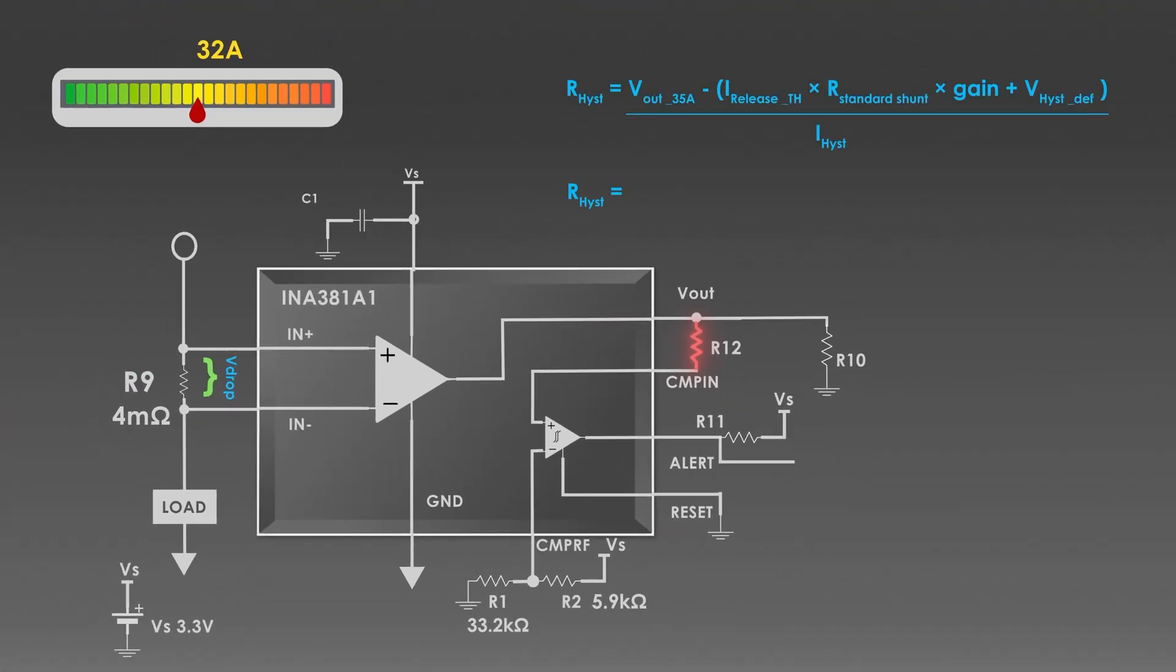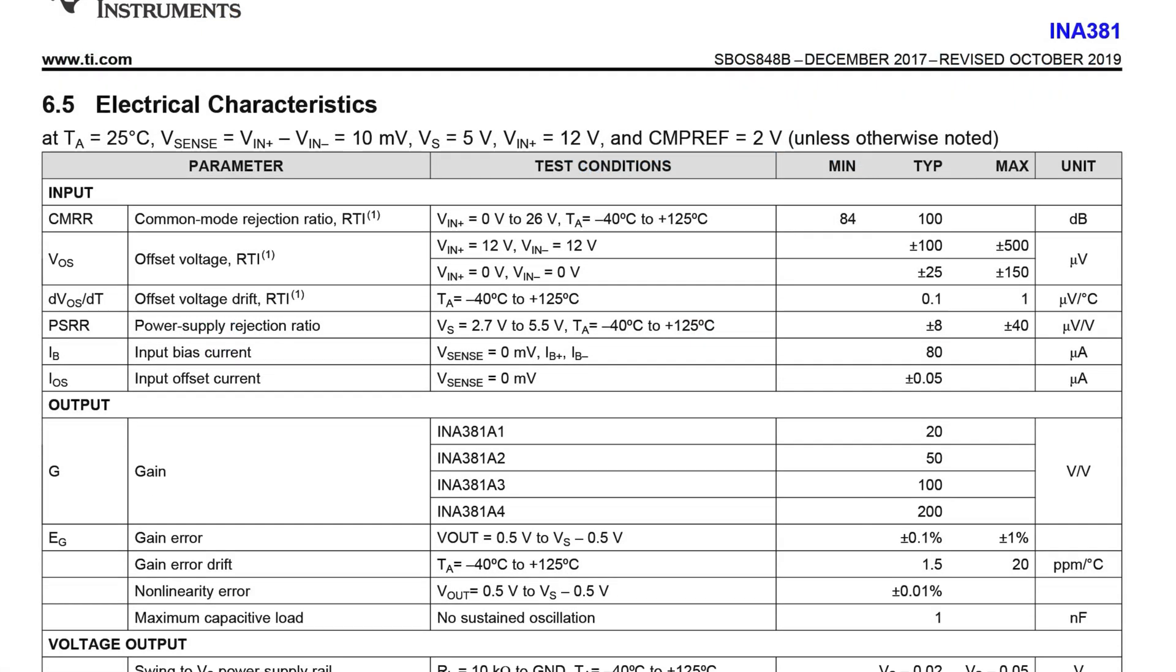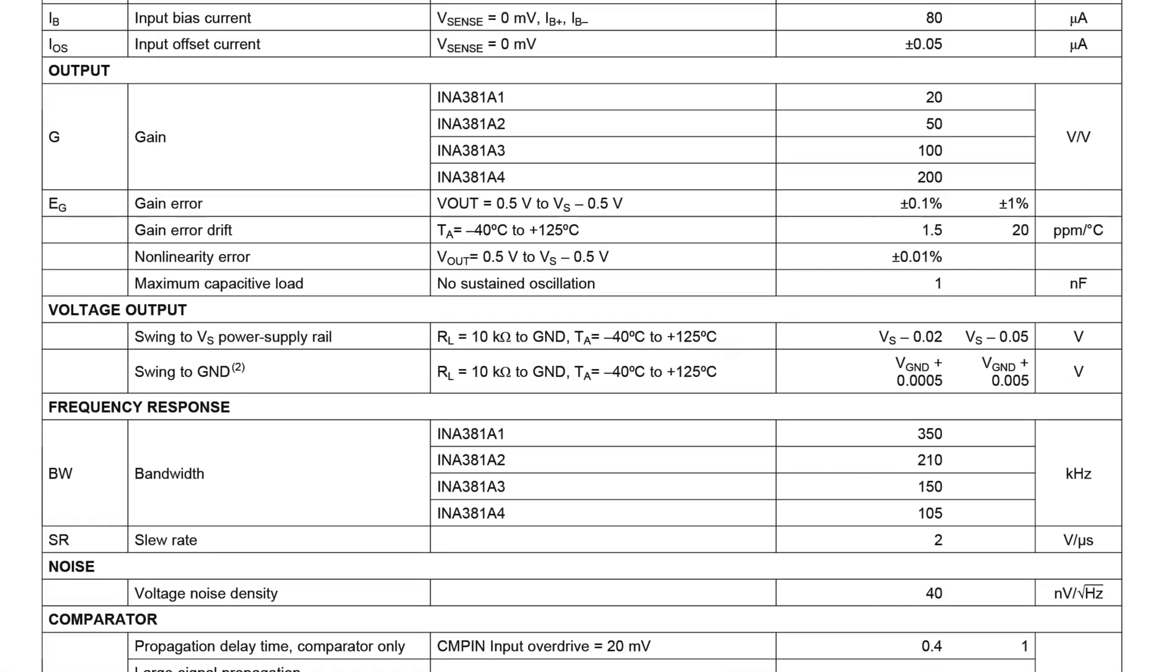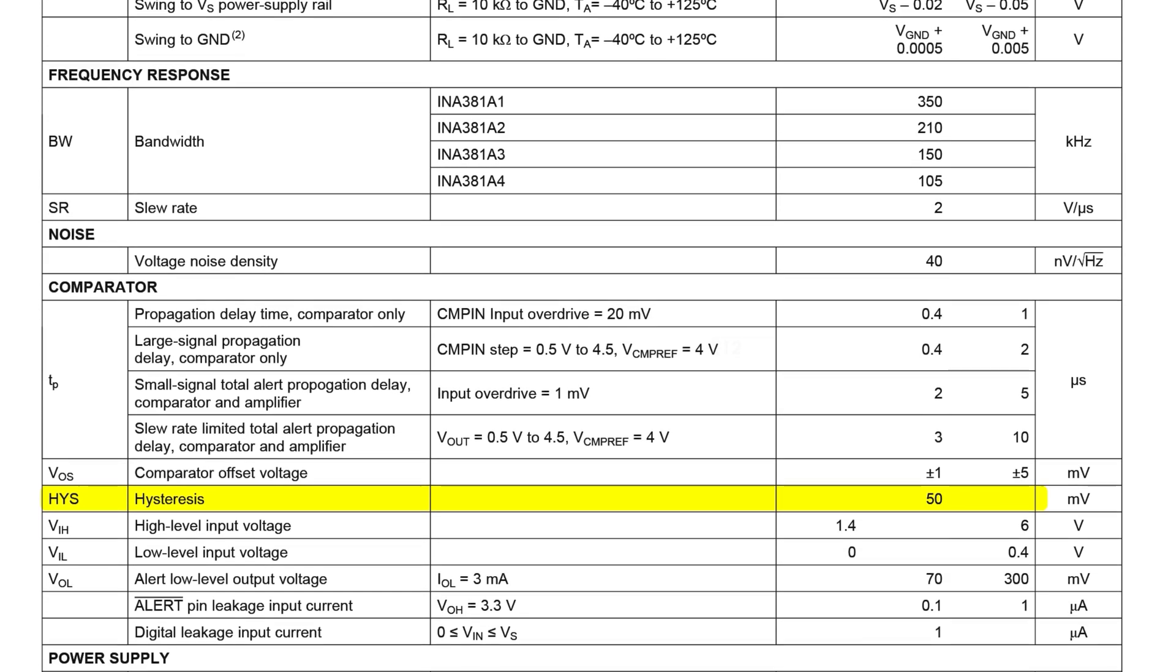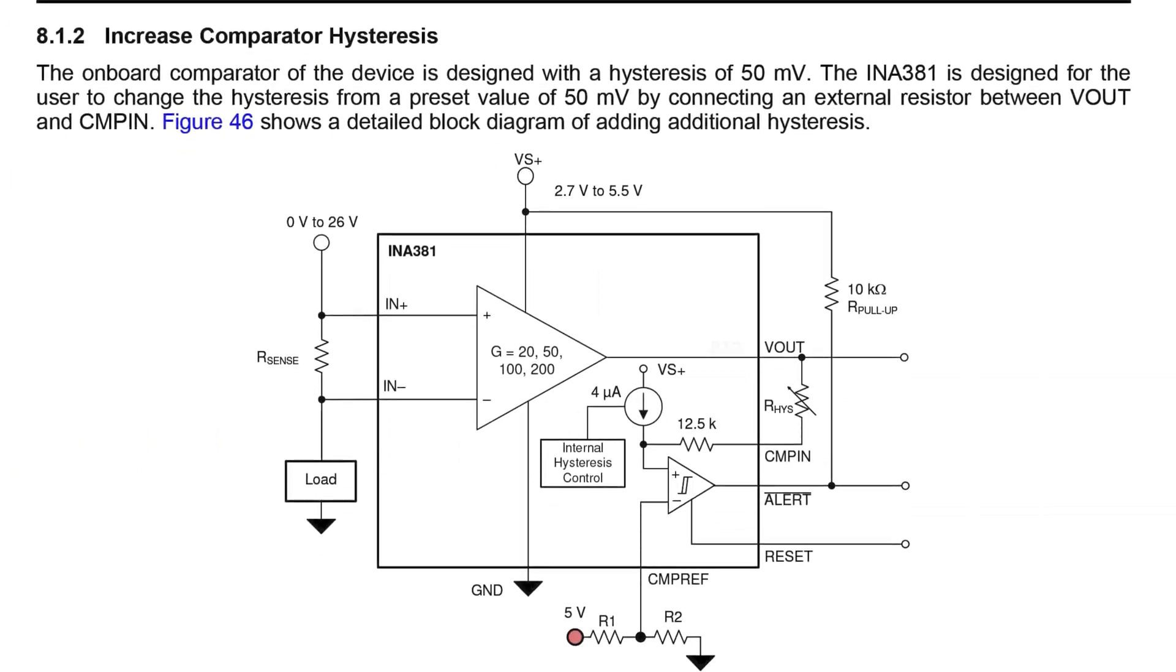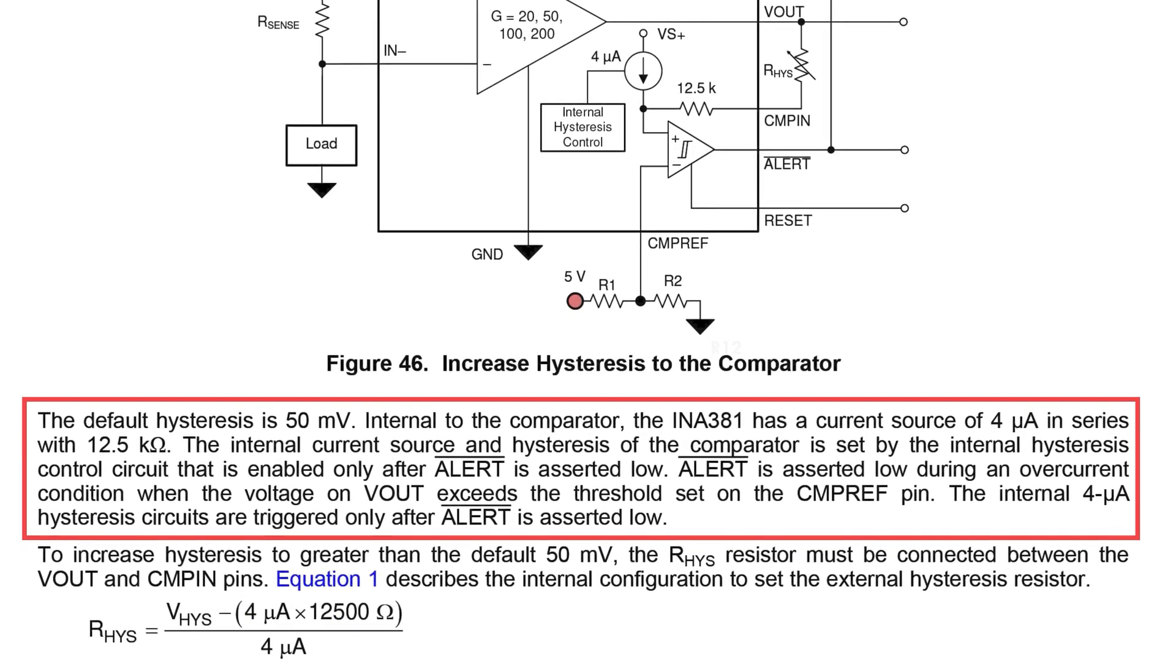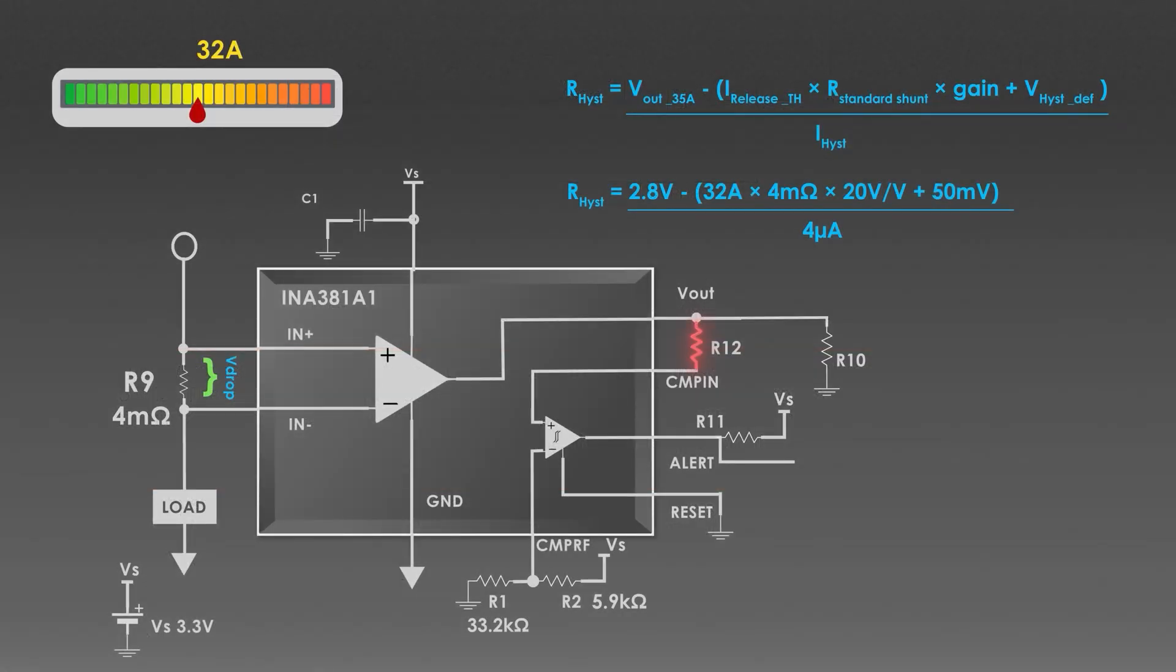where Vout is the output voltage of the amplifier when the load current is 35 Amperes. The release threshold is 32 Amperes. The shunt resistance is 4 milliohms. Gain is 20. This is an internal offset voltage that accounts for slight variation in the comparator threshold. It is by default 50 mV. And finally, the hysteresis current which is 4 microamperes. We get both of these values from the datasheet.